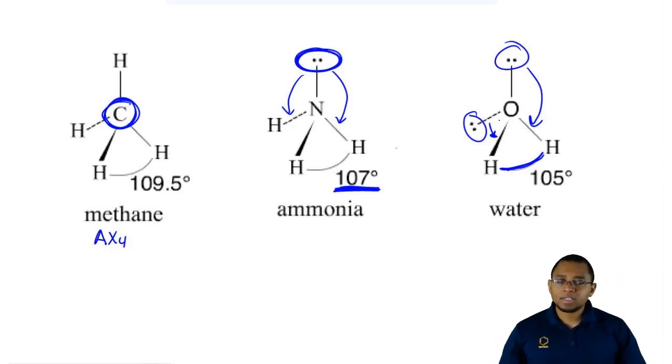What you're supposed to take from this is those ideal bond angles are only if the central element has no lone pairs. Once the central element starts to have lone pairs, the bond is going to get smaller and smaller.